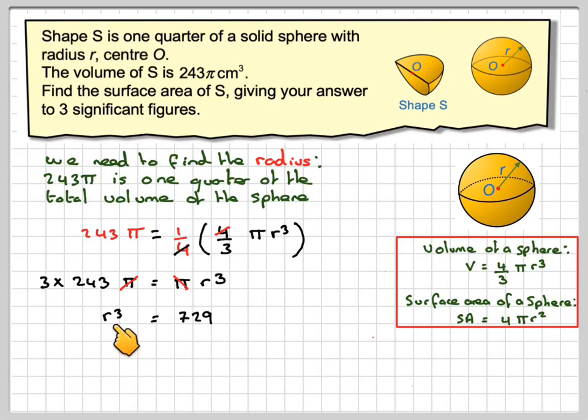We've got r³, we need to find r. So in order to find r, we need to take the cube root on both sides. Taking the cube root, we're going to get that r is equal to 9 centimeters. So the radius of our sphere is 9 centimeters.